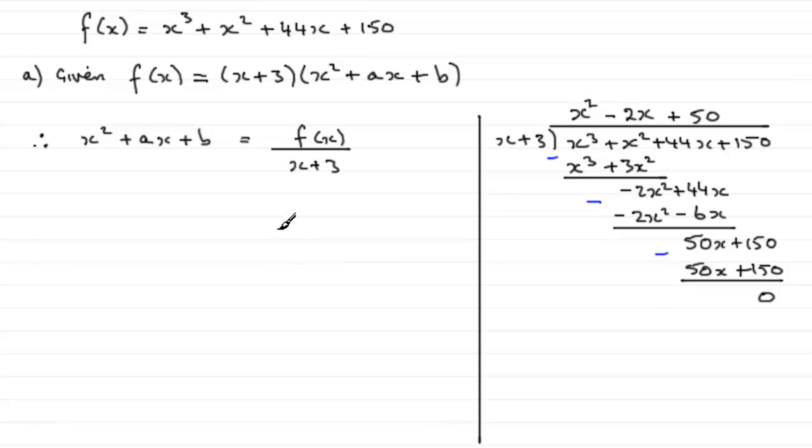So what we've got is that x squared plus ax plus b is identical to x squared minus 2x plus 50. And we can compare this quite easily. We can see that a must be equal to the coefficient of x, which is minus 2. And clearly, b is equal to 50. There you go. That's how I would do it anyway.